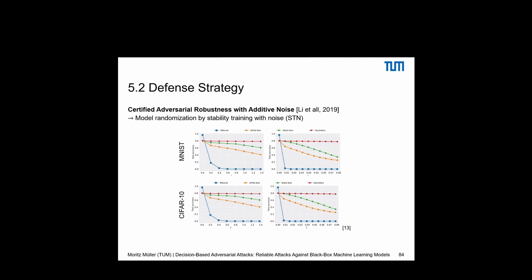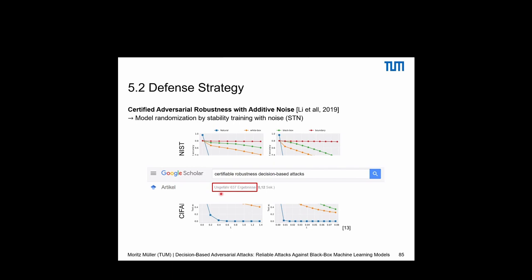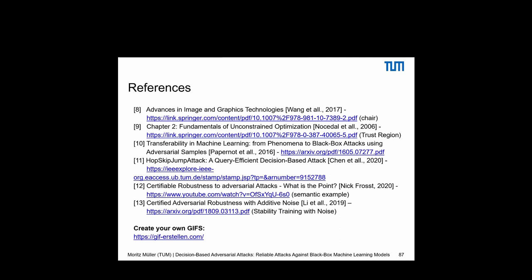Adversarial robustness against decision-based attacks is an ongoing field of research — new attacks and defenses appear every year. There are only around 600 results for certified robustness-based attacks, meaning this remains a huge open area. References are provided, and you can also create your own adversarial GIFs using the FoolBox tool. Any questions?